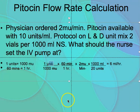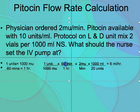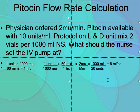Now solving: 60 × 2 × 1000 in the numerator, with 1000 and 20 in the denominator. The 1000s cancel, and 20 goes into 60 three times. Three times 2 equals 6. The answer is 6 milliliters per hour — that's what the nurse is going to program the pump to deliver.